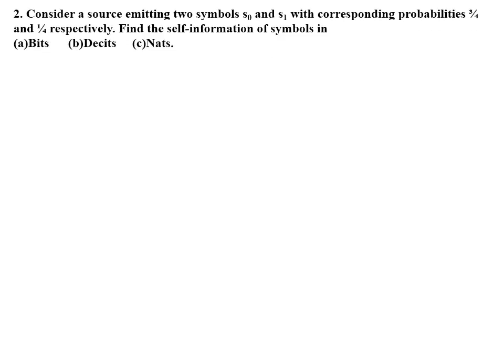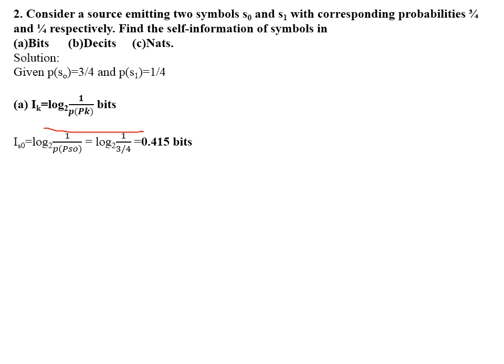Second problem: consider a source emitting two symbols S0 and S1 with probabilities 3/4 and 1/4 respectively. Find the self-information of these symbols in bits, decibels, and nats. The probabilities are given as P(S0) = 3/4 and P(S1) = 1/4. Using I(k) = log₂(1/p(k)) for bits: I(S0) = log₂(4/3) = 0.415 bits, and I(S1) = log₂(4/1) = 2 bits.